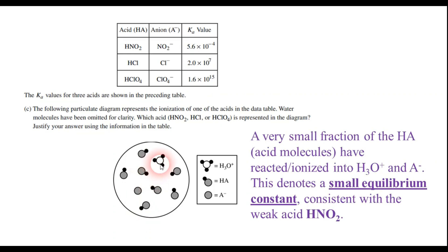And we only have a very small fraction that have dissociated into hydronium. Here's a hydronium here, and here's the conjugate base, A negative. So since we have very few of the acid molecules ionizing, this tells us that it's a weak acid. You know, because not too many molecules of a weak acid are going to ionize, generally speaking. It also denotes a very small equilibrium constant. And the only acid for which that would hold true in this table would have to be the nitrous acid. So it has to be HNO2.